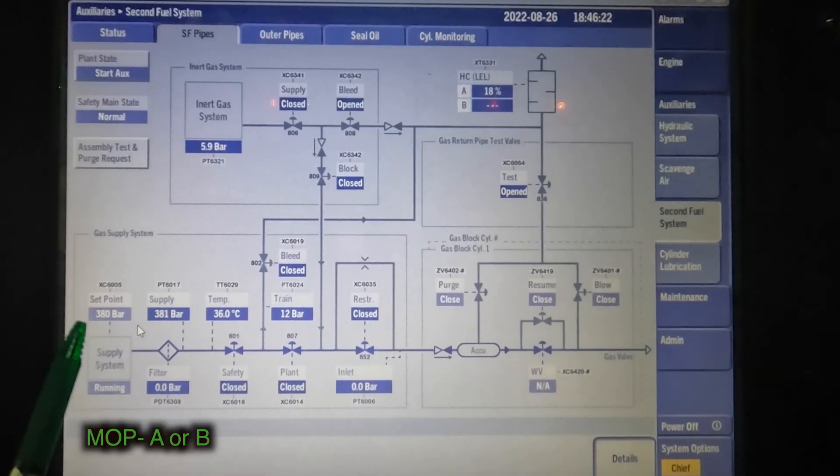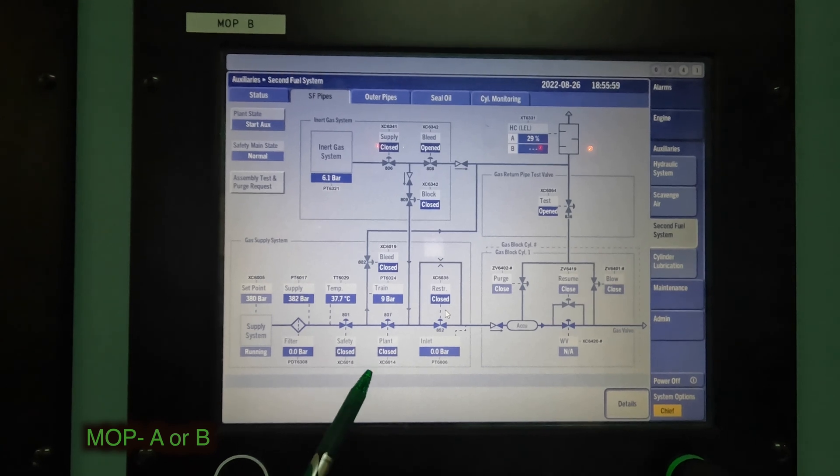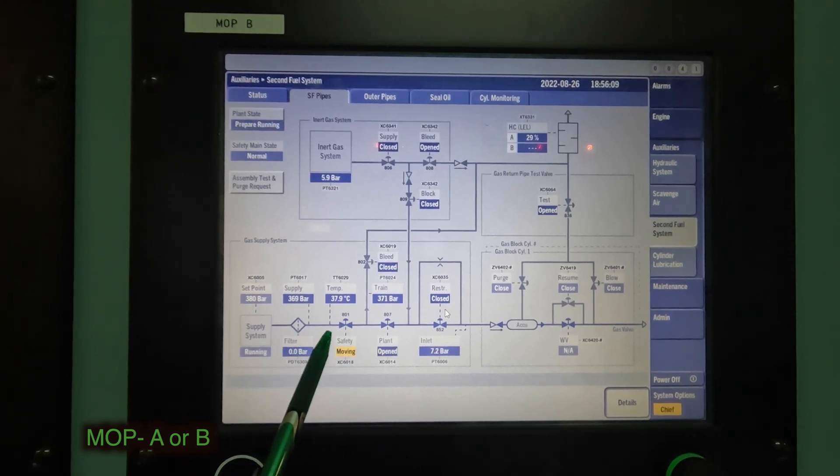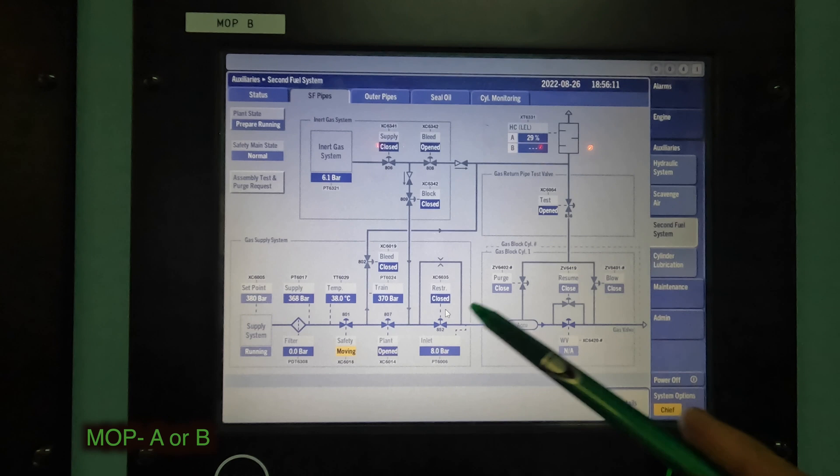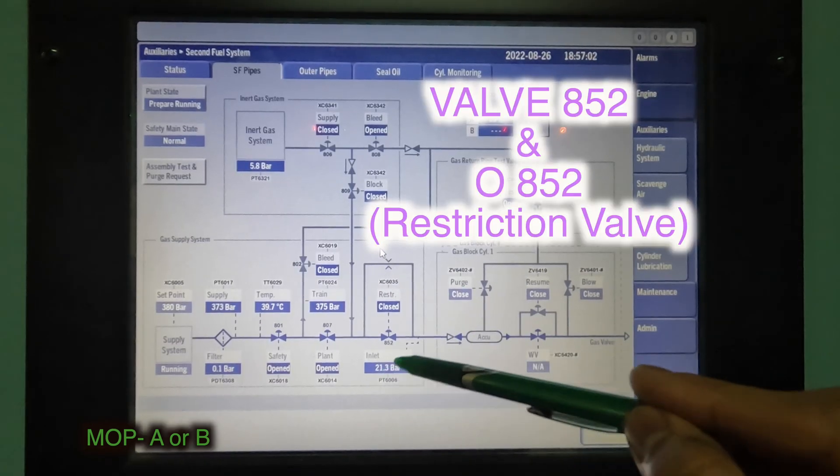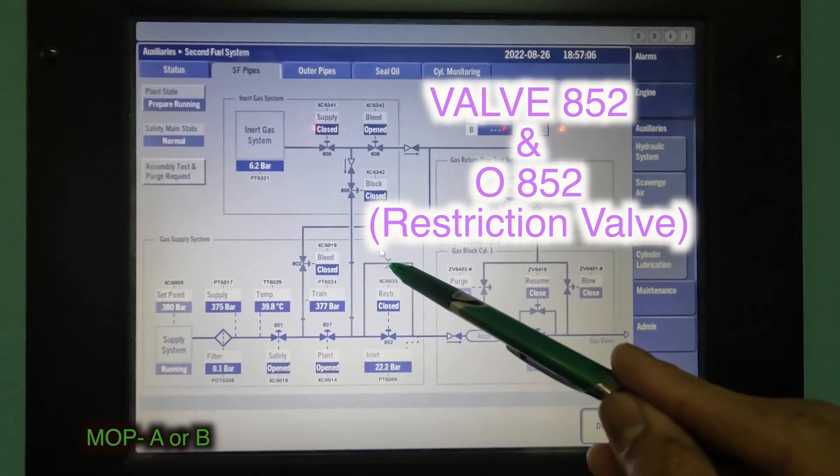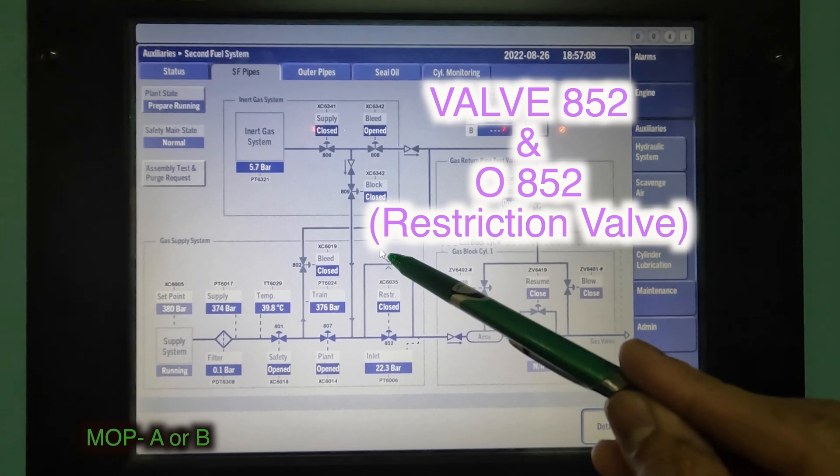Once the pressure reaches 385 bar, now we should get the signal to these valves to open. So the gas will start moving here across the orifice in the restriction valve. So this whole thing together, it is called as 852. 852 the main valve, and here we have 0852 which is the orifice or restriction 852.